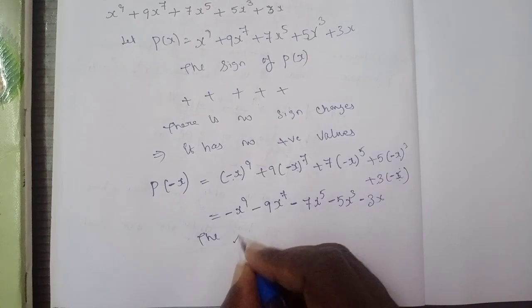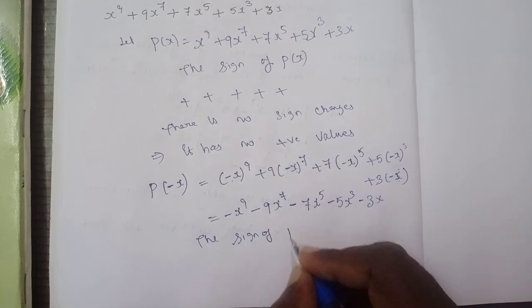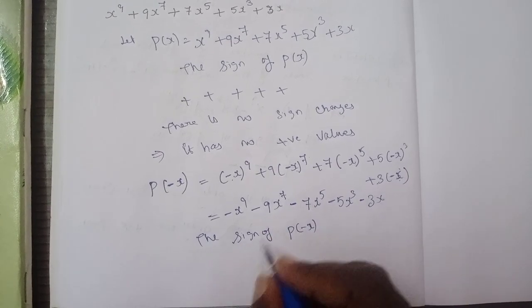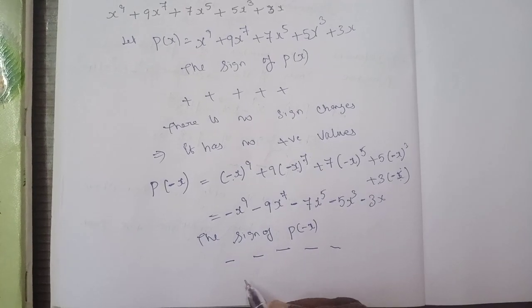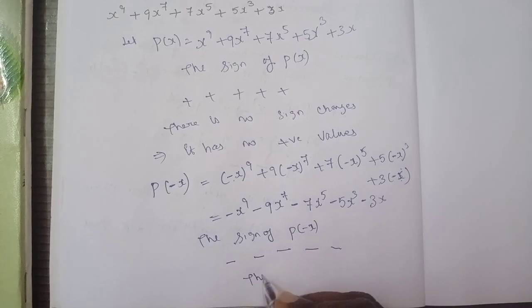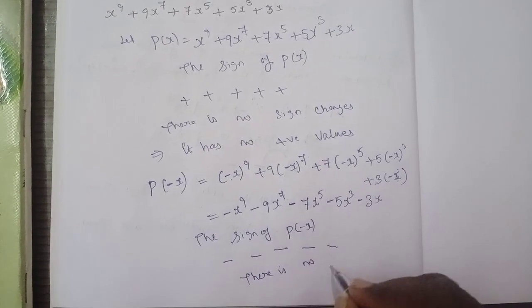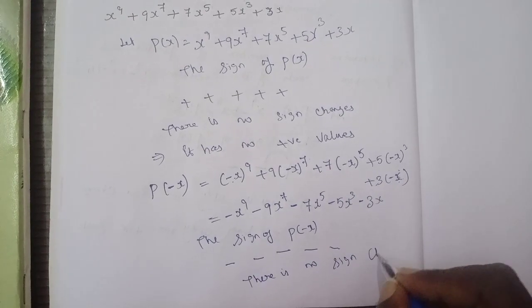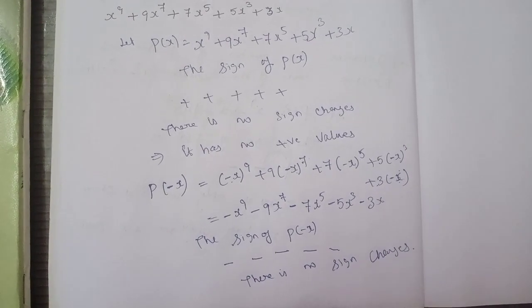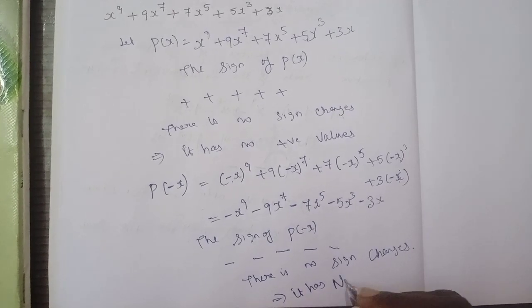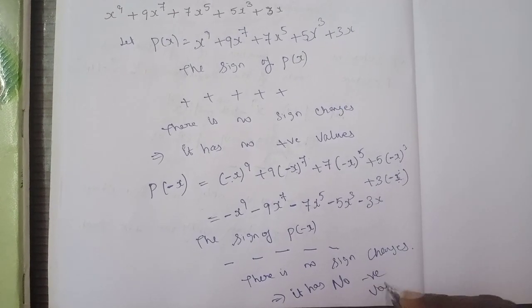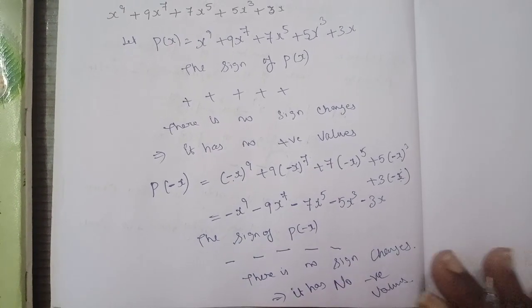So this is the sign of P(-x). Is all negative? There are no sign changes. No sign changes means it has no negative values. So this has no sign changes and no negative values.